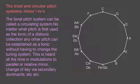This tonal pitch system can be called a circulating system. No matter what pitch is first used as the tonic of a diatonic collection, any other pitch can be established as a tonic without having to change the tuning system. We just heard that in our series of major and relative minor or minor and relative major progressions. We can get from any spot on this circle of fifths to any other spot using these kinds of modulations, and we hear this all the time in modulations to parallel or relative minor, change of key by way of secondary dominance and all the other things available to us in tonal music.